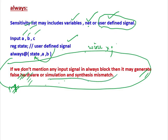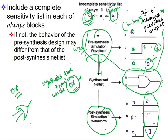If we do not mention any signal in the sensitivity list, it will generate false hardware because the real hardware may differ from what was intended — it may generate some other hardware entirely.